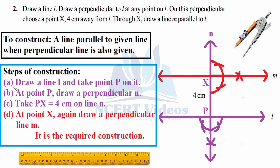Steps of construction: step one, draw a line l and take a point P on it using a ruler or scale of any length that fits on your paper. Step two, at point P draw a perpendicular n. You don't need to explain how to draw the perpendicular since you've already studied it — but let's briefly revisit how to draw a perpendicular on a given line at point P.